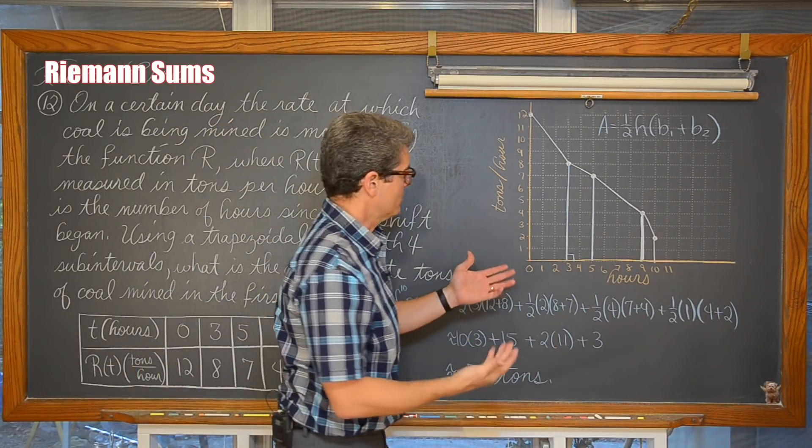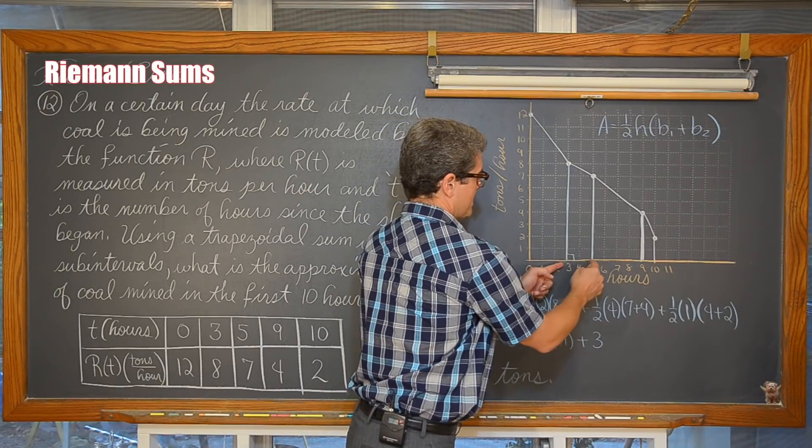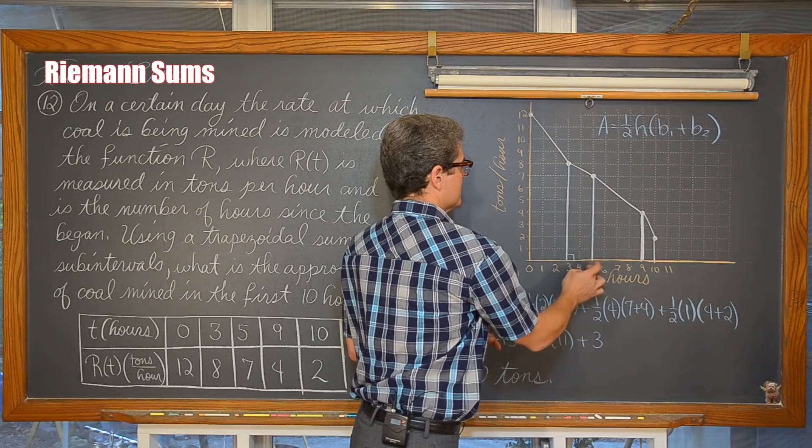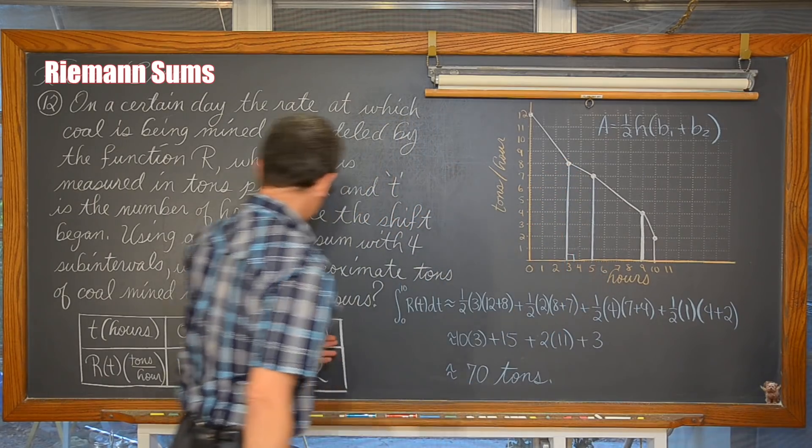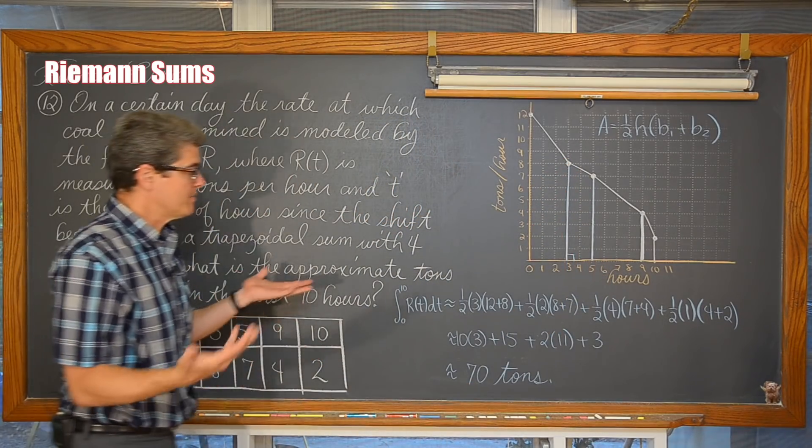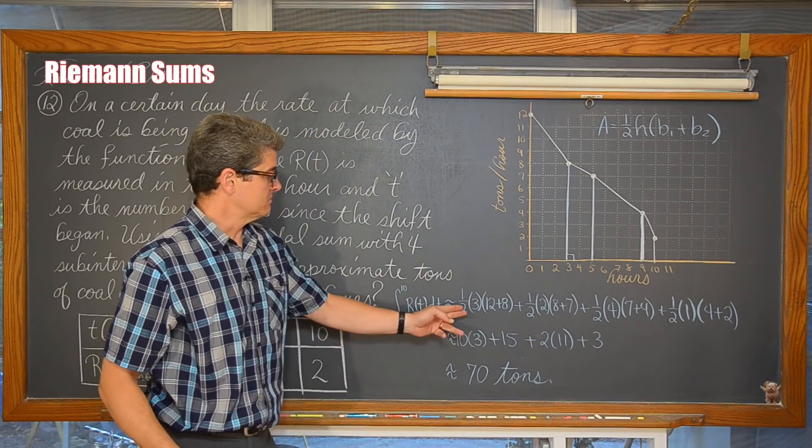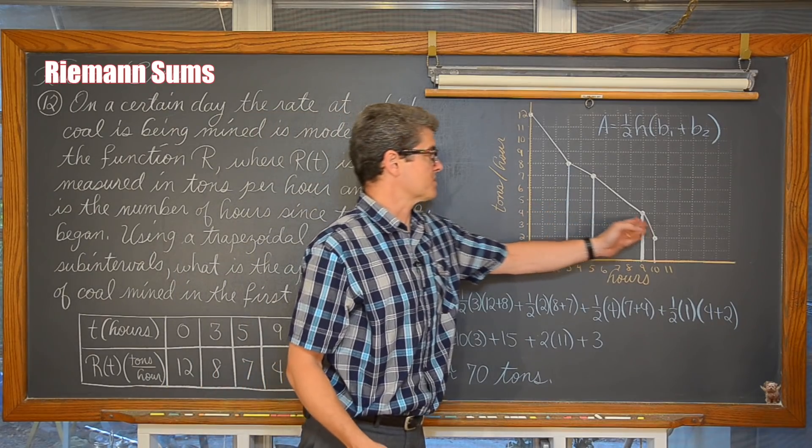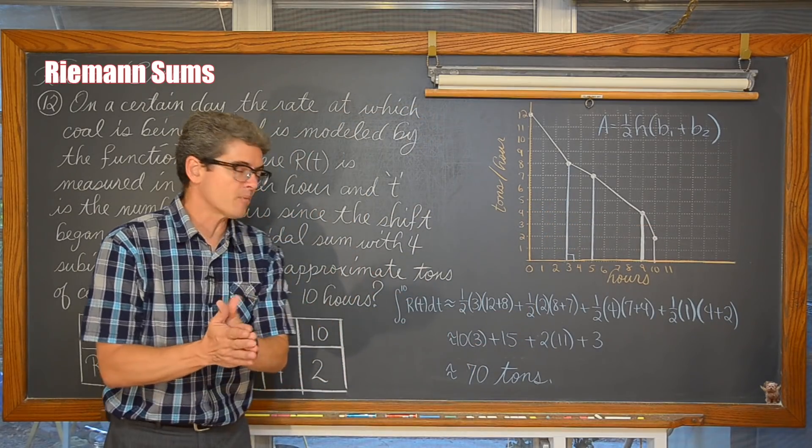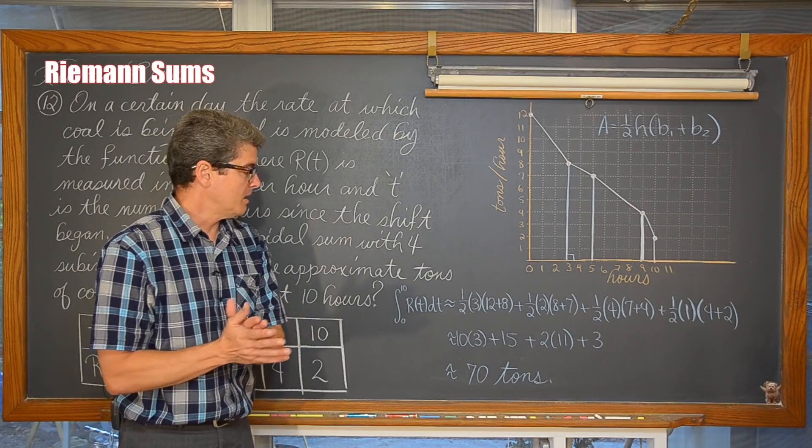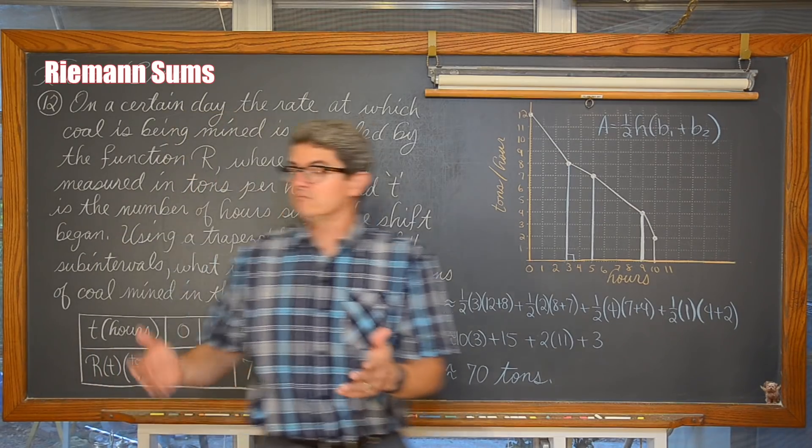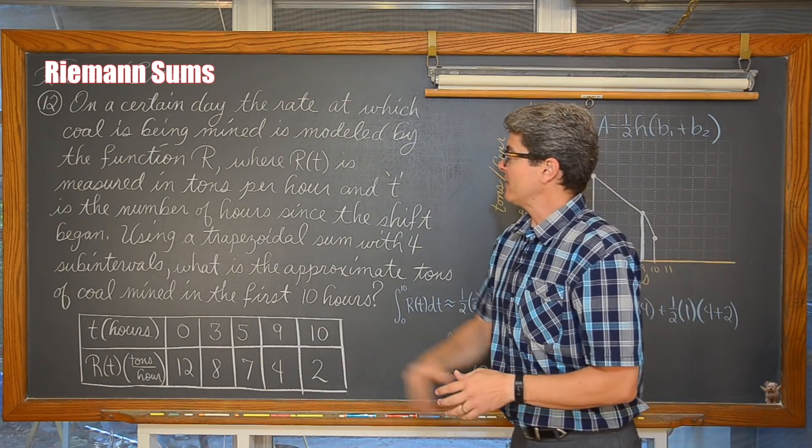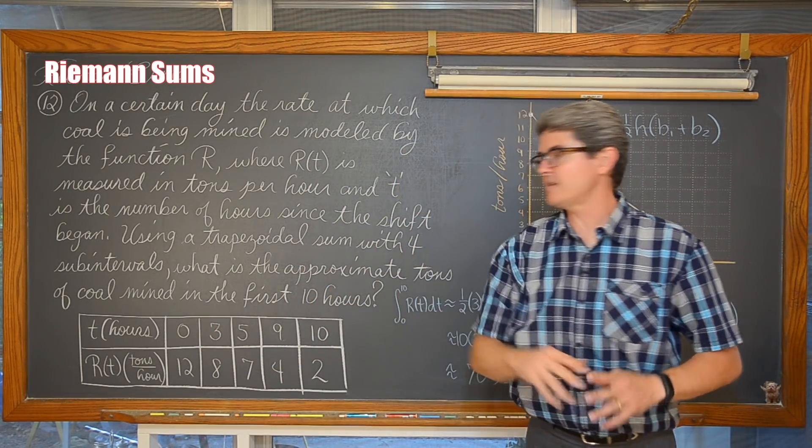Here we have got a trapezoid whose height is from three to five two, and we have a base of seven and a base of eight. Of course, we see that in the table. So I am not doing anything fancy. We are just going ahead and one-half the height times base one plus base two for each of the four sub-intervals, and coming up with our approximated value of 70 tons.